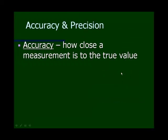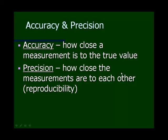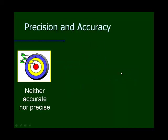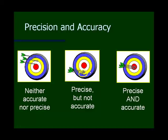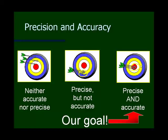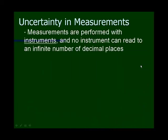Accuracy is how close you are to the true value. Precision is how close measurements are to each other. Looking at a bullseye: in the first case, arrows are all over the place. In the second, they're all grouped together — precise but not accurate. In the third, they're accurate and precise, all grouped together in the bullseye. That's our goal in lab: precise, repeatable measurements that are close to the true value.